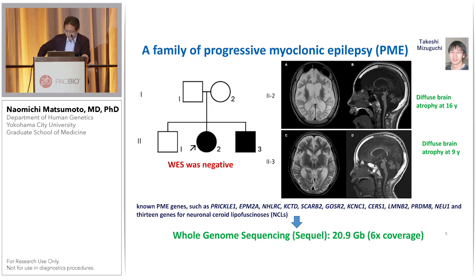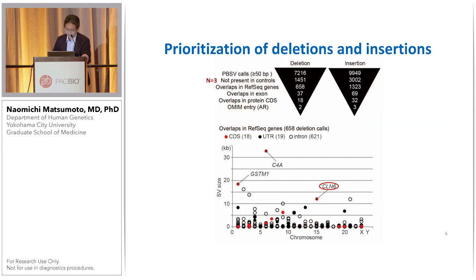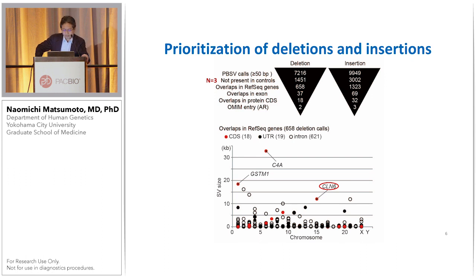So we decided to introduce a long-read sequencing system. We did six-fold coverage sequencing for this particular problem. This is how we narrowed down SNVs and CNVs — especially deletions and insertions, nearly several thousand in total. Using three controls, we excluded overlapping CNVs from the case result, narrowing down to reference sequencing and overlaps in exons and protein coding sequences. Finally, we could identify a few candidate genes, including CLN6.